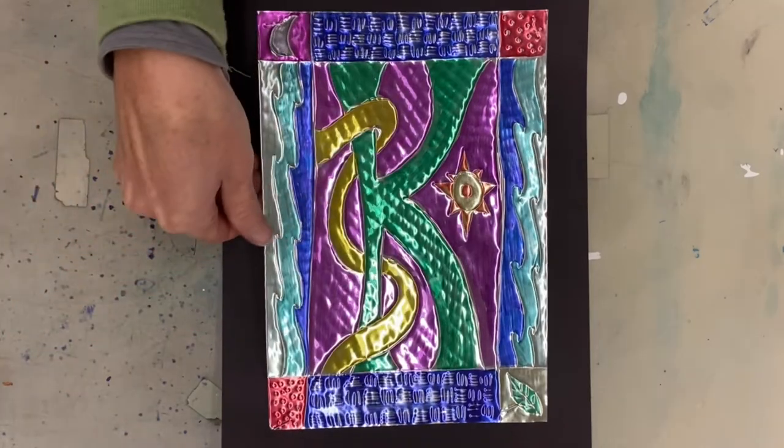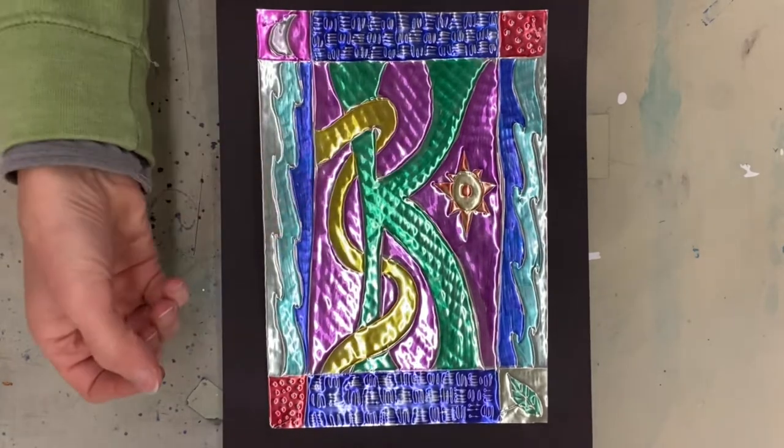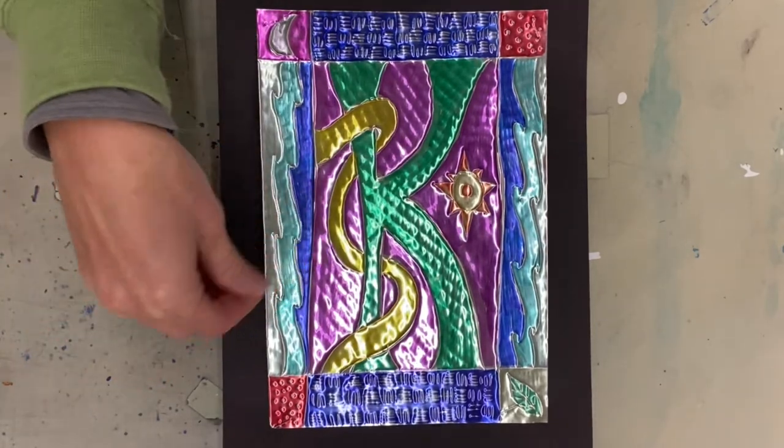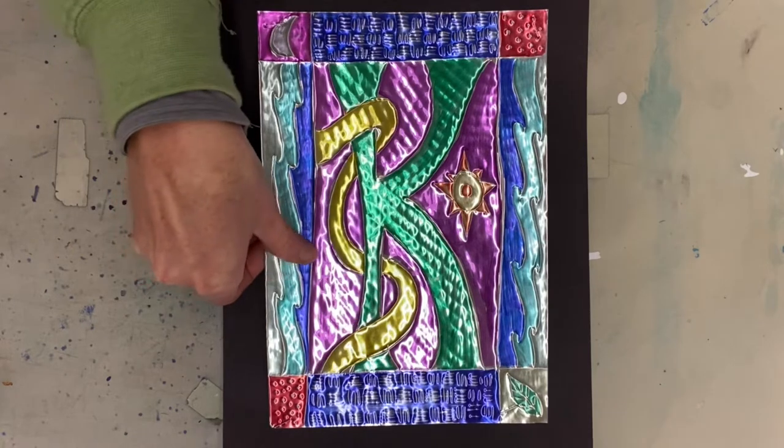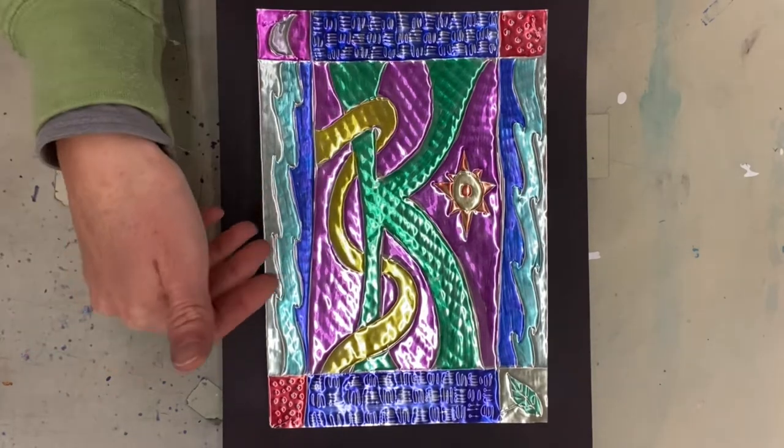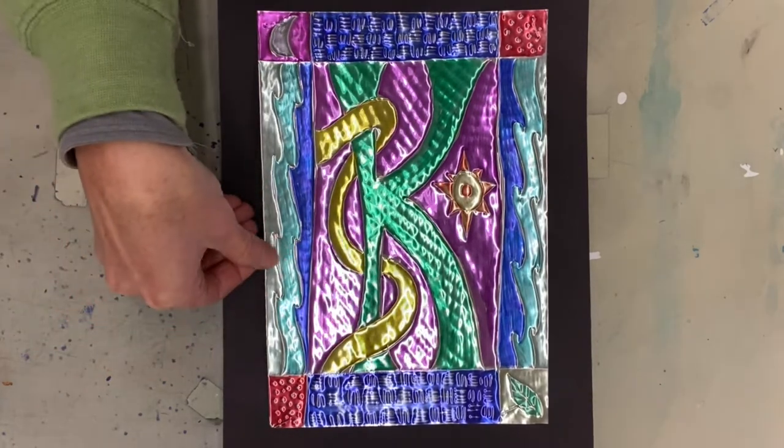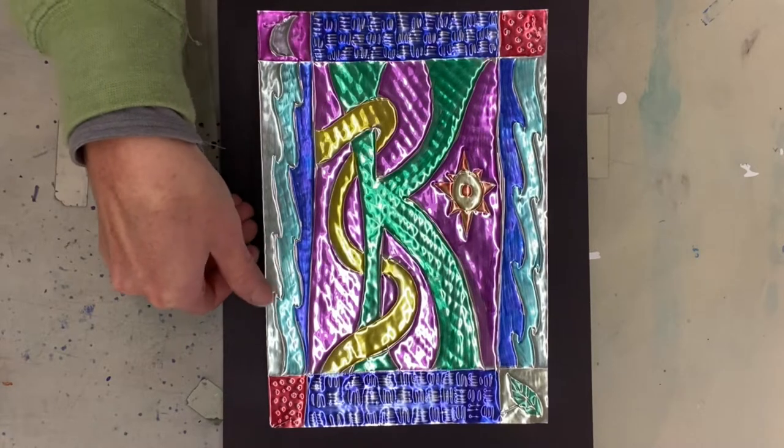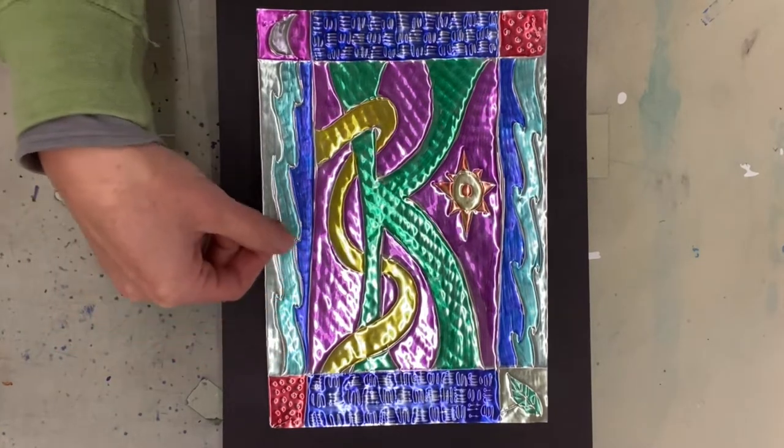Today we are going to learn about metal tooling. Metal tooling is when you take a nail, or in this case a pen, and carve into 36 gauge metal. Now you can get this metal at Hobby Lobby or Michaels. It's much thicker than aluminum foil because you don't want your nail or pen to dig or rip through the metal.